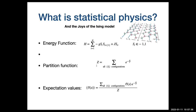We have physical observable things, which are expectation values. You ask: what's the expected value I will see of a particular spin? Do I expect to see it up or down? You average the thing you want to observe with this distribution weighted by temperature. This is actually the definition of temperature - it's how much you weigh other states in the partition function.